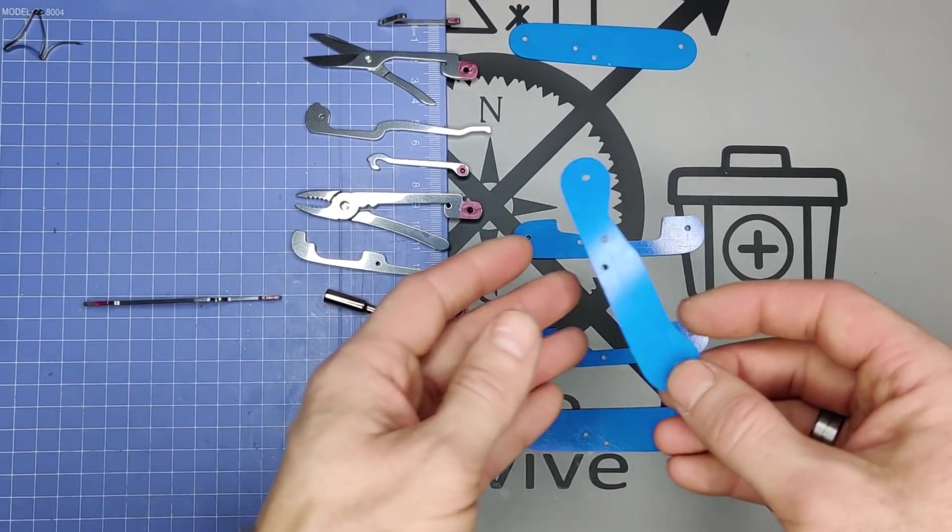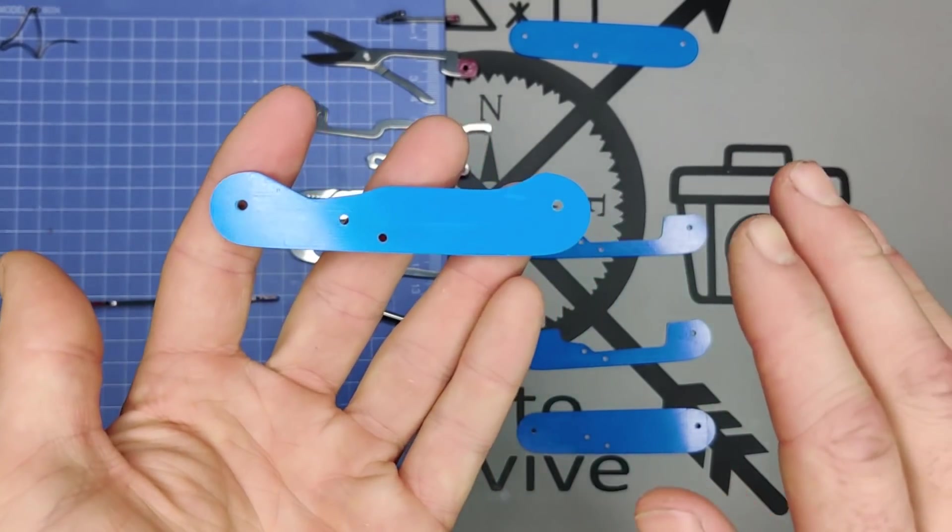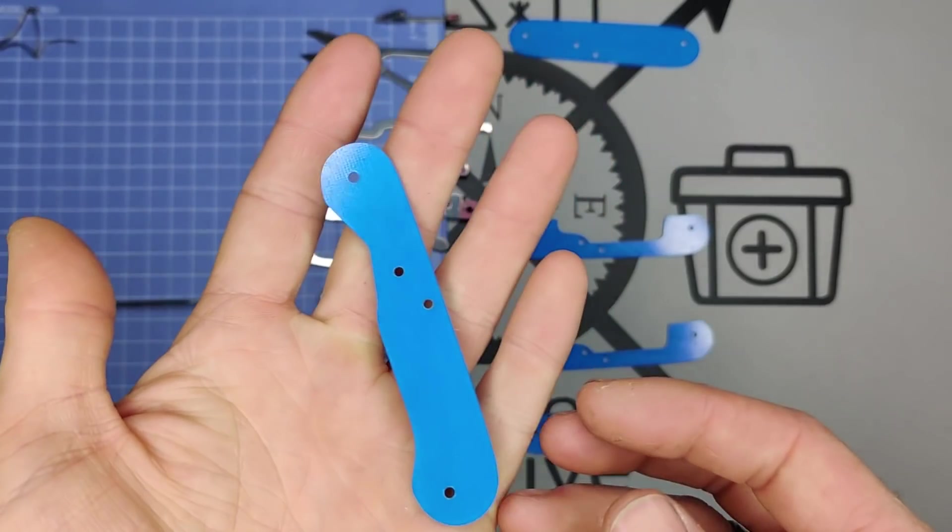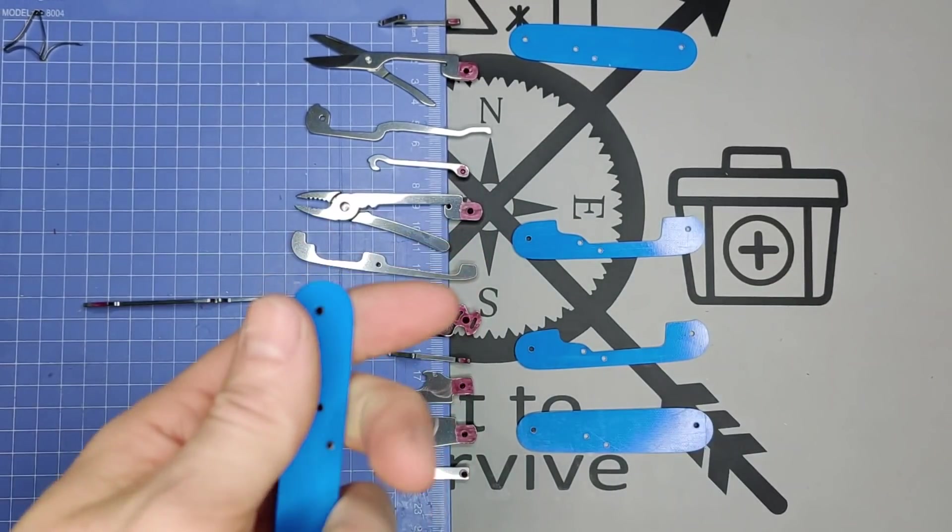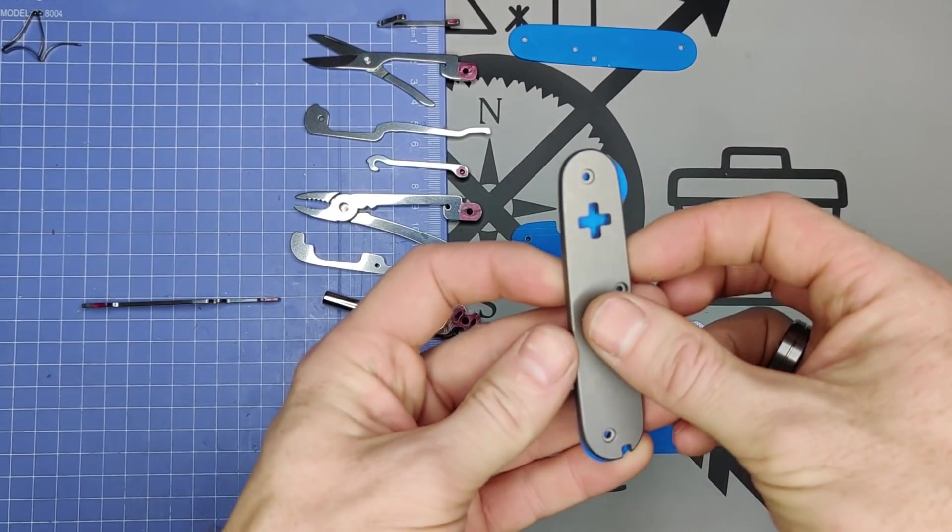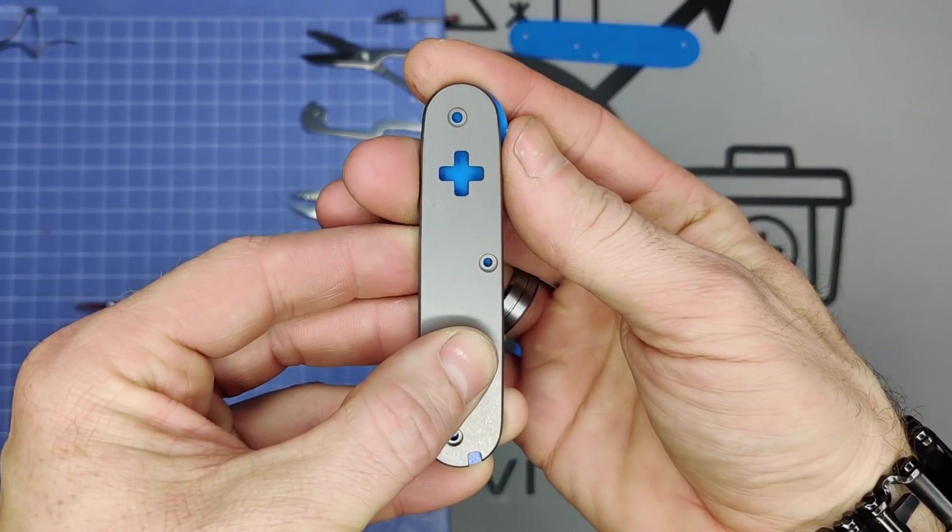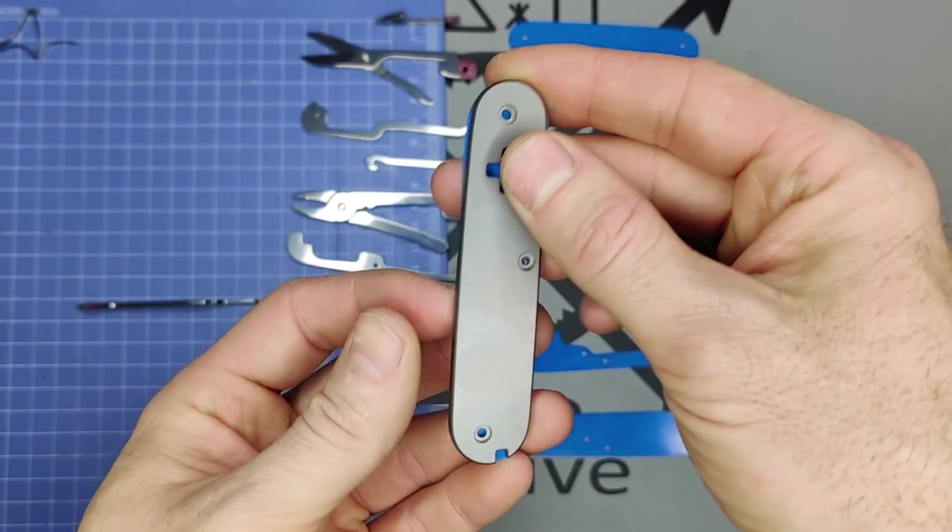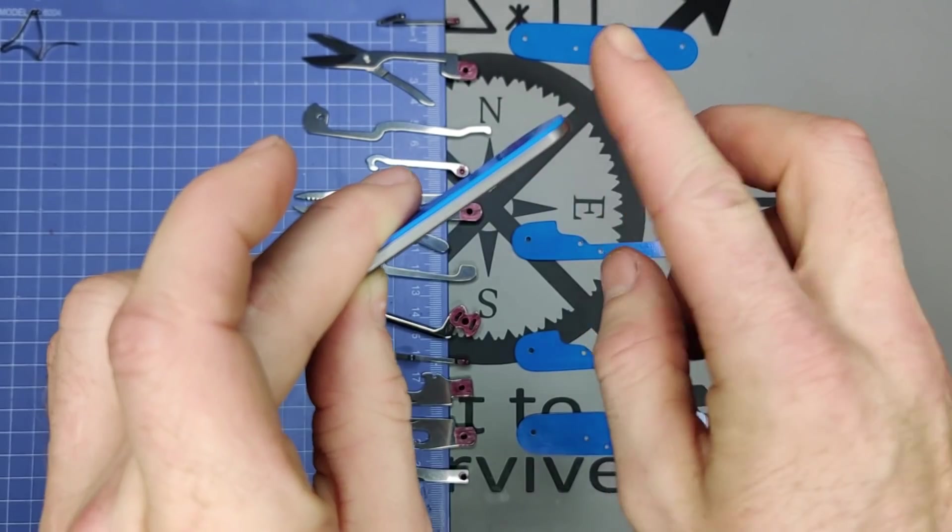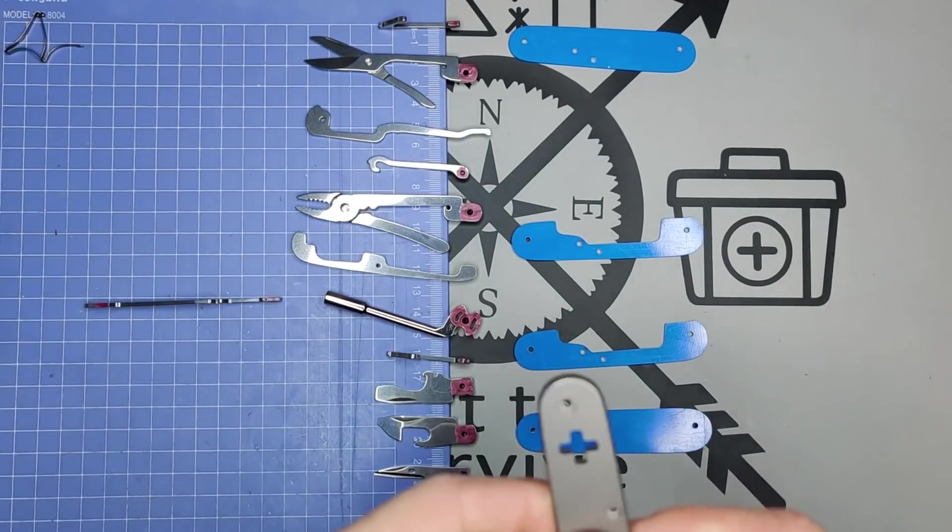All right, and so a question that I get quite often is, is there any advantage for the G10? Well, obviously, the first advantage is the style. It's going to add a lot of style. You know, we have a nice titanium scale here and you have this nice blue G10. The edge will be visible. You have this peek through right here. And so it's going to look good.